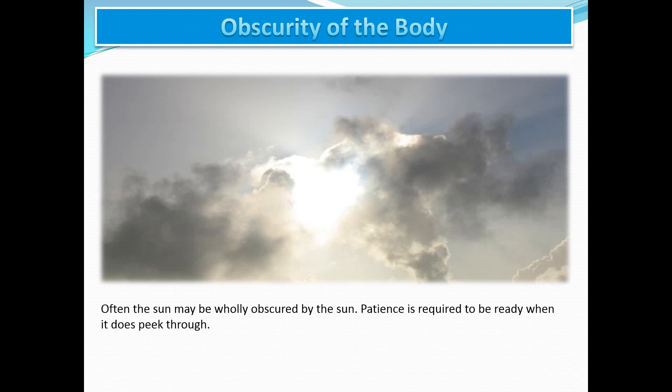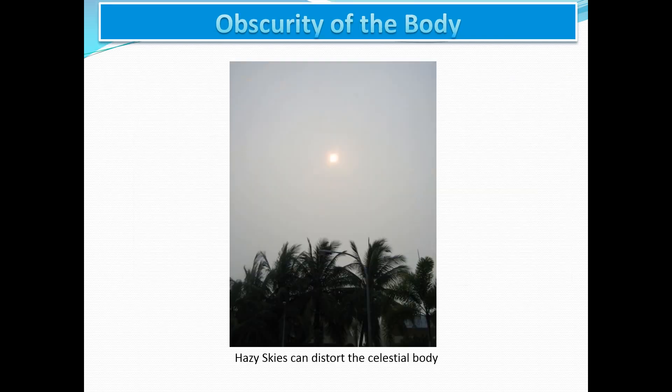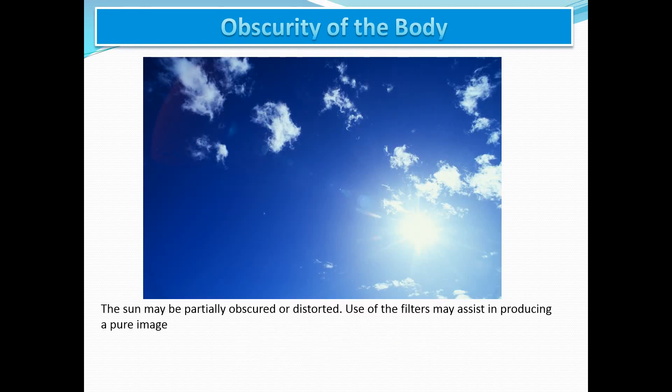The third limitation falls under obscurity of the body. The sun may sometimes be sighted through thin cloud, but the shape and size may be distorted, and it may then be necessary to bisect the disk with the horizon. An alternative trick is to deftly turn in the whole telescope and concentrate on the sun's image. In many instances, sextant observations are completely prevented by the presence of clouds. Sometimes hazy skies can distort the celestial body, and the sun may be partially obscured or distorted. Use of the filters may assist in producing a pure image, as shown in the slides here.